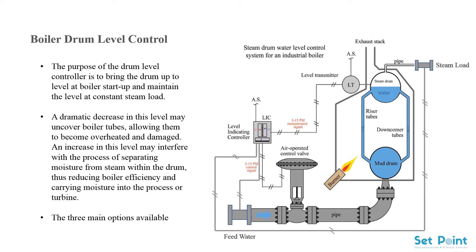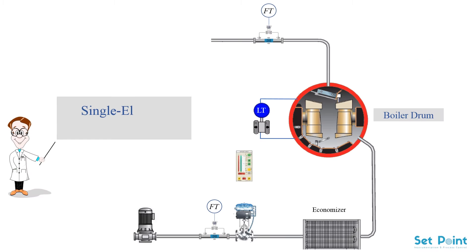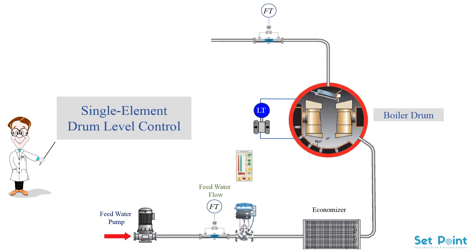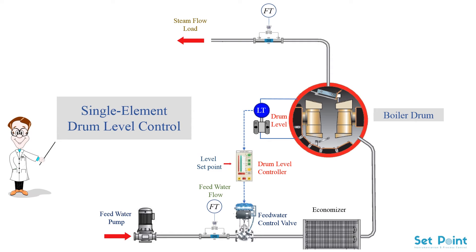The three main options available for drum level control are: single element drum level control. In this type of control mechanism, water is fed into the boiler drum through a single or multiple pipes and thus a single or multiple control valves. Only the water level in the drum is measured through a level transmitter and the information is sent to the controller. Based on the obtained information, it is compared to the set point and then control valves are manipulated in order to increase or decrease the flow rate of the water inside the boiler drum.